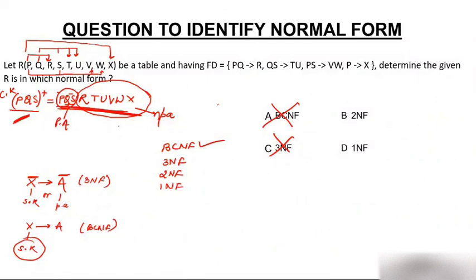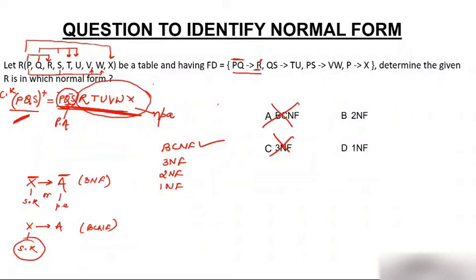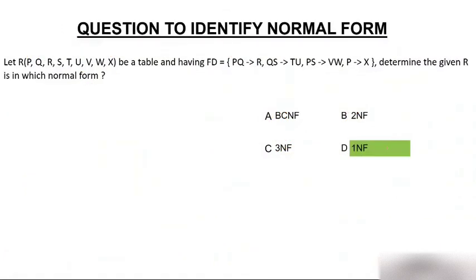Since the table is not in 3NF, let's check 2NF. 2NF says the key should not be broken — no non-prime attribute should be partially dependent on the key. Our key is PQS. The dependency PQ→R shows that non-prime attribute R is dependent on only a part of the key (PQ), not the full key PQS. This is a partial dependency, so the table is not in 2NF either. Therefore the table is in 1NF — that is our answer.